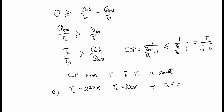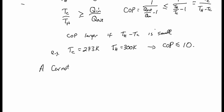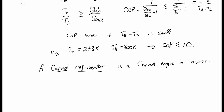For example, if T_c equals 273 kelvin — keeping something at freezing temperature — and T_h equals 300 kelvin (room temperature), you get a coefficient of performance less than or equal to 10. The ideal refrigerator that meets this limit is called a Carnot refrigerator, and that's simply a Carnot engine in reverse.